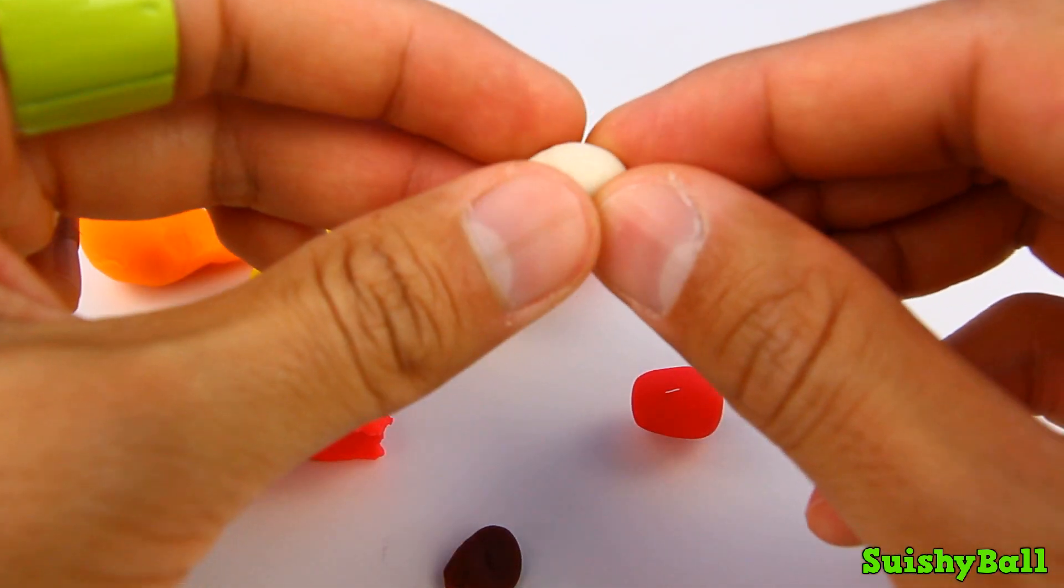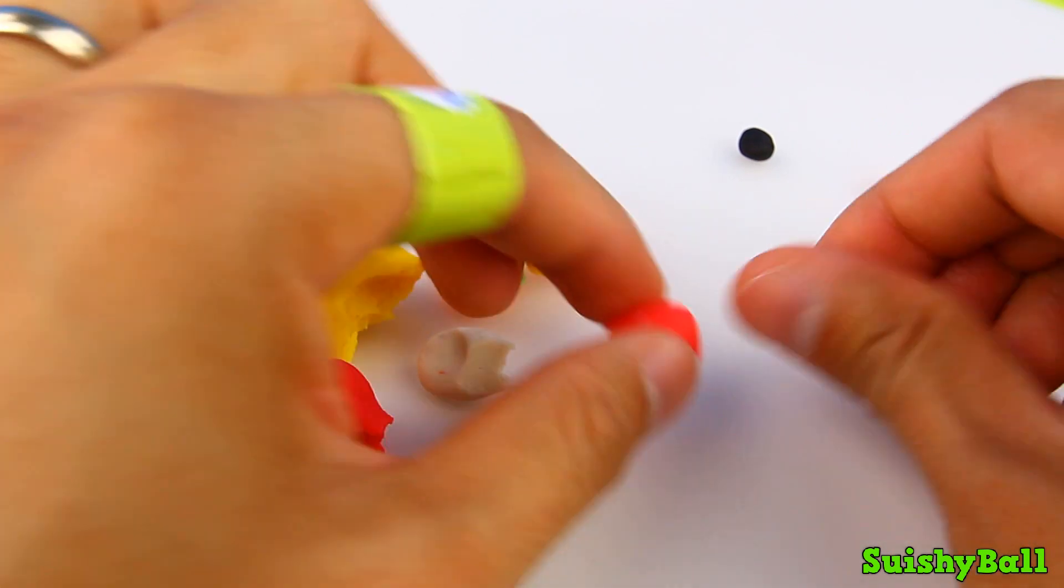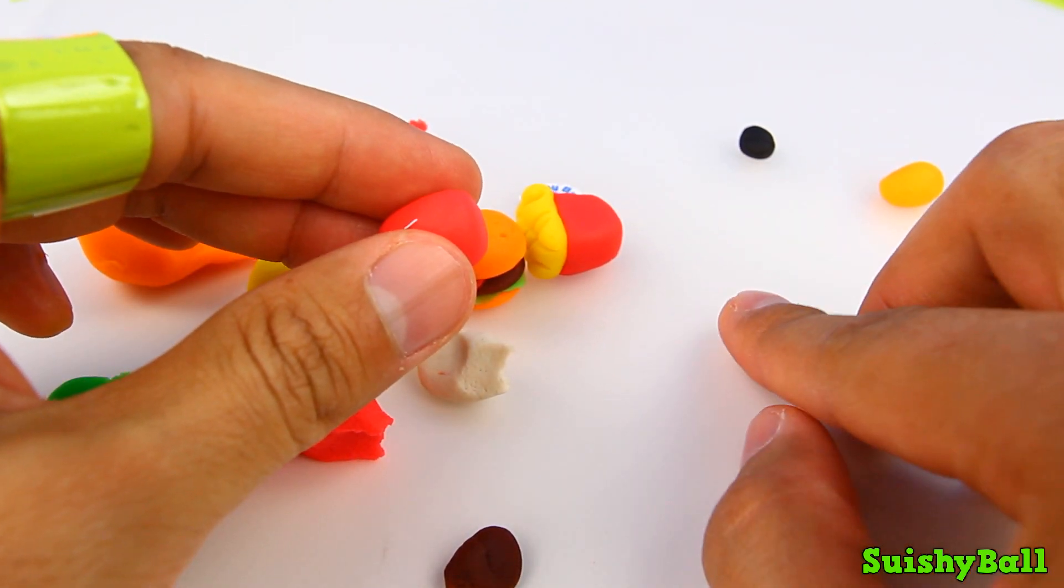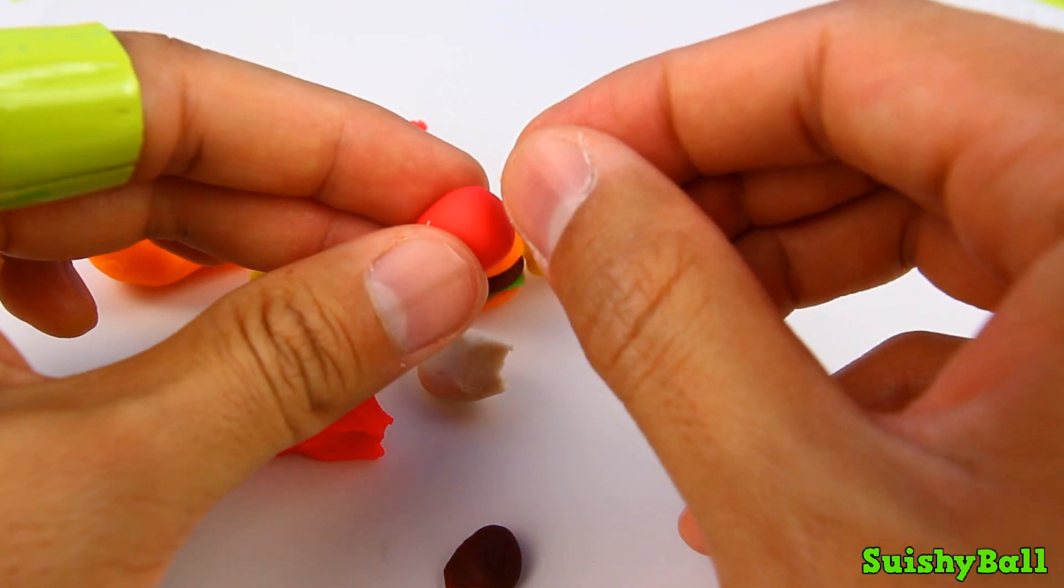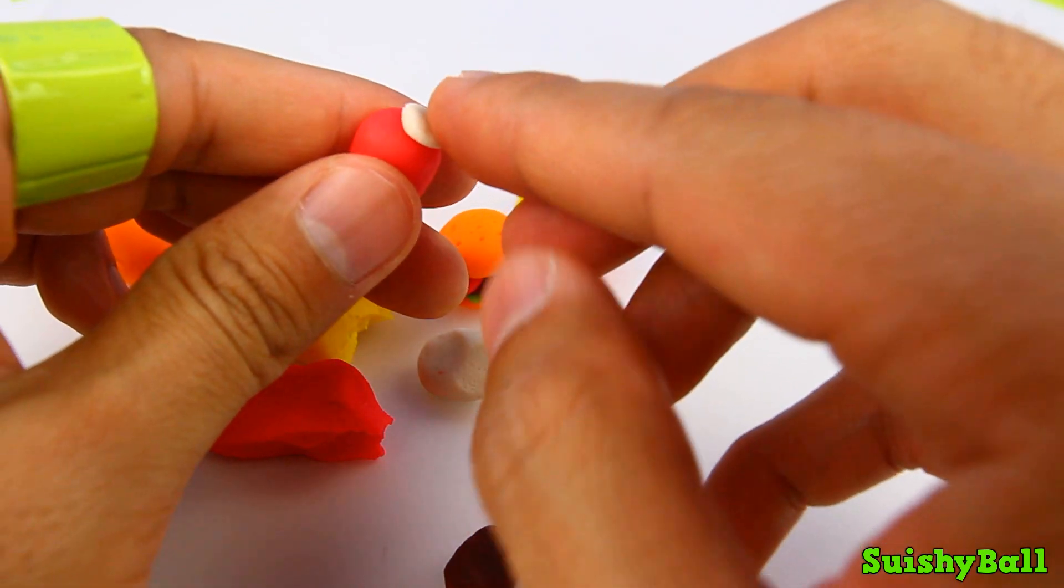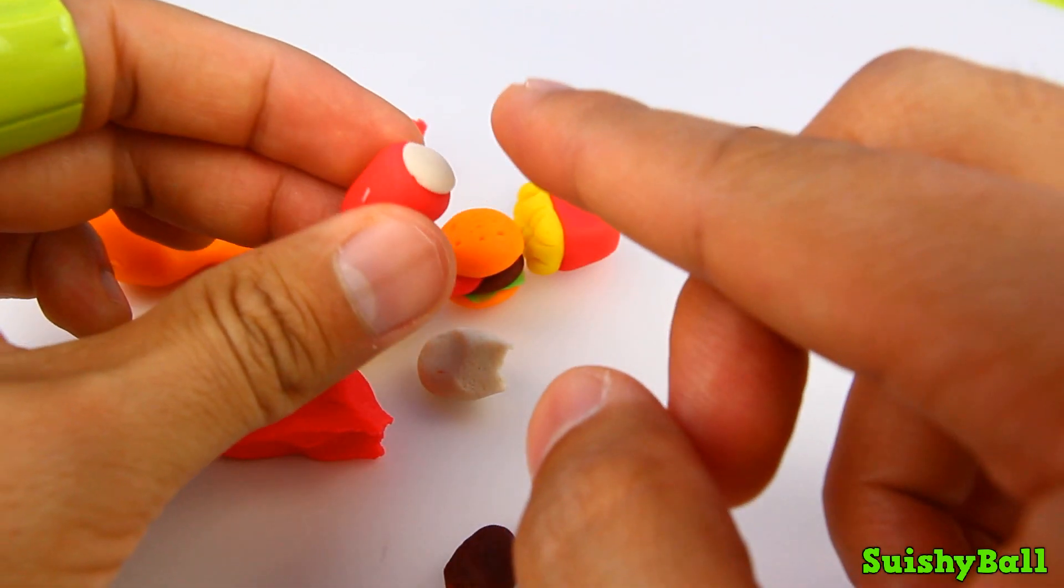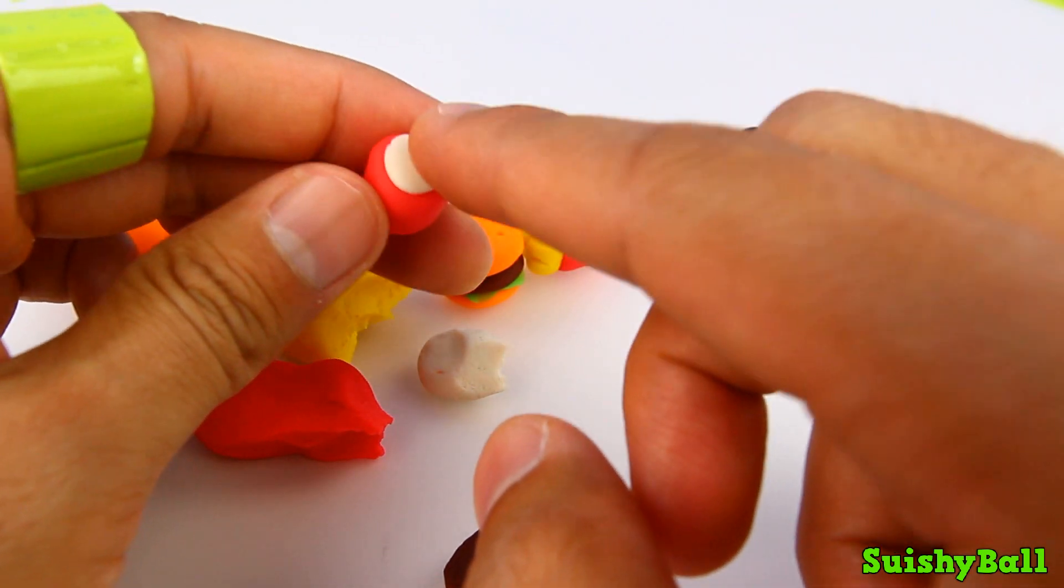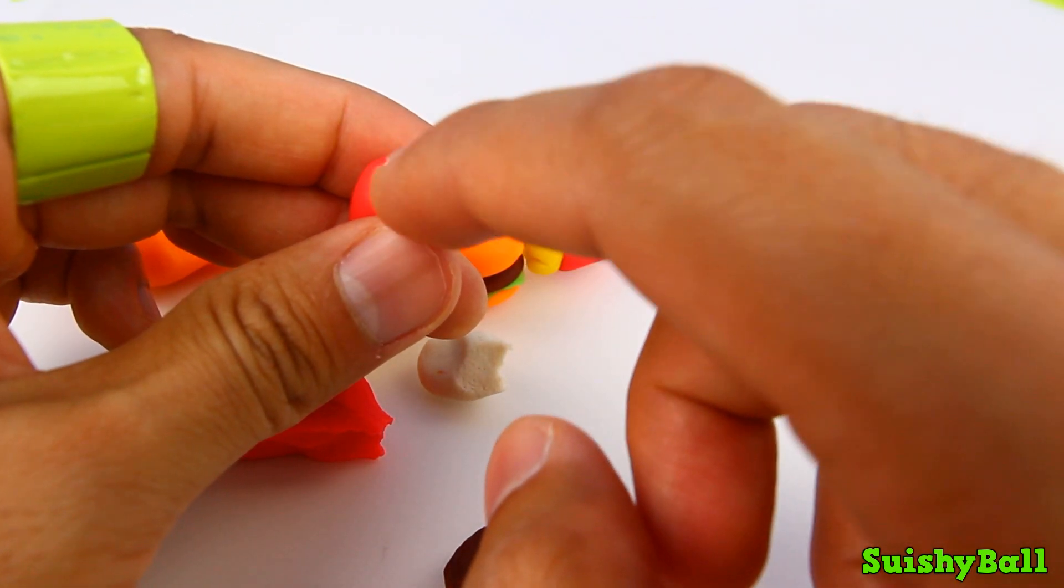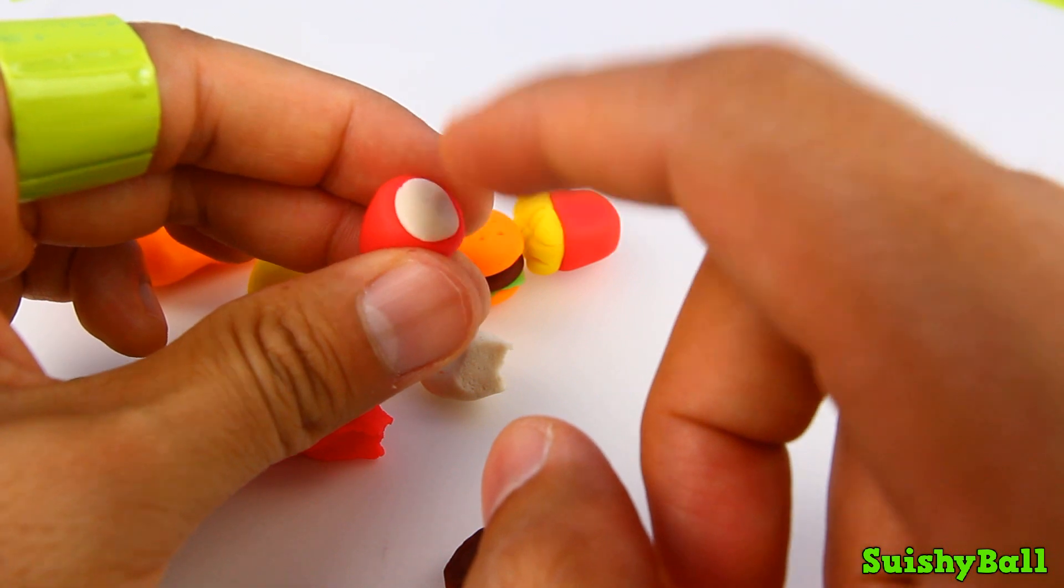Okay, then I'm going to add a little piece of white play-doh so that it looks like a cup now is wrapped in this red paper. So this is the top of the paper cup.